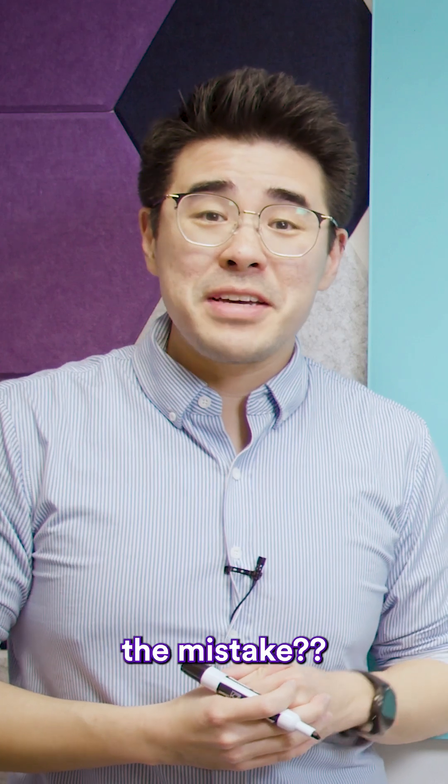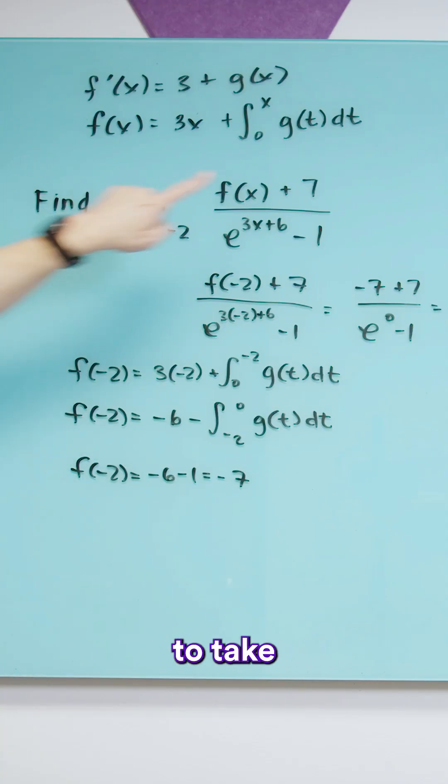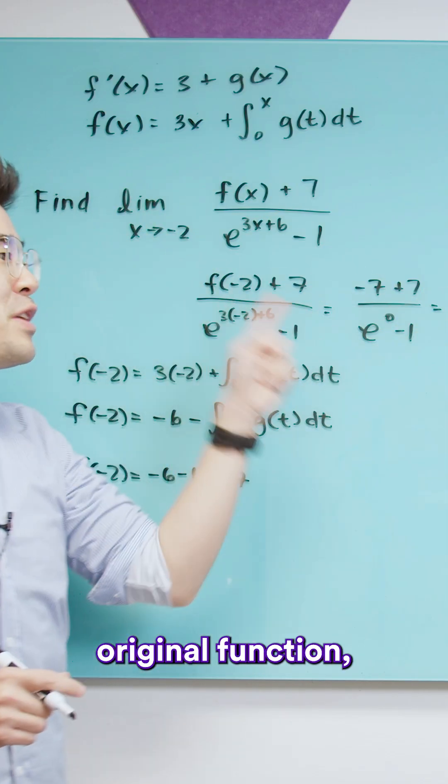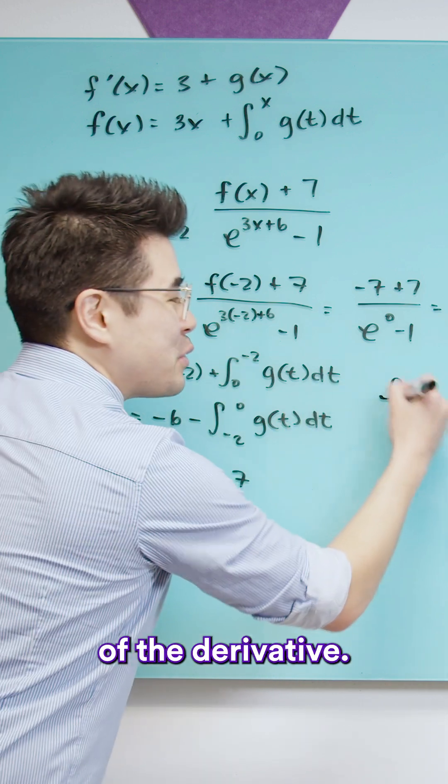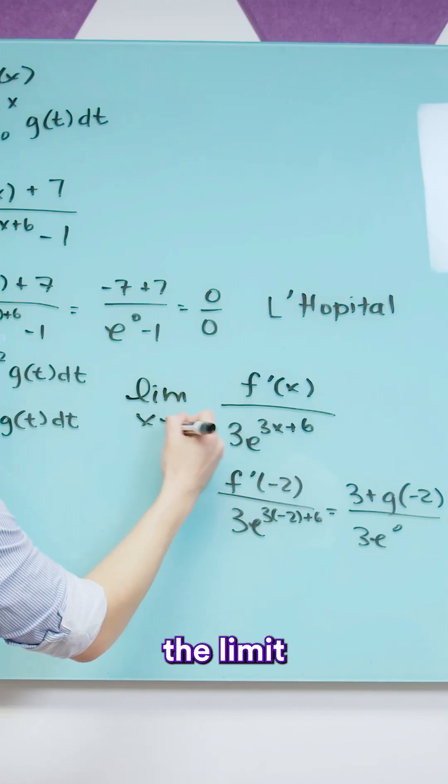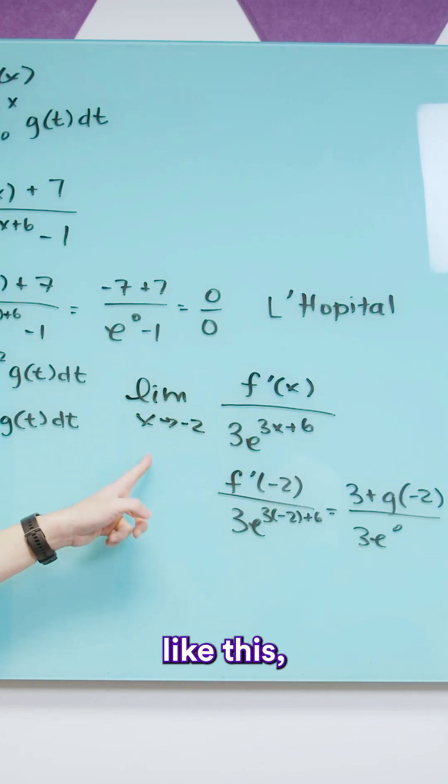Stop! Did you spot the mistake? When you're using L'Hopital's rule you're supposed to take the limit of not only the original function but you're supposed to take the limit of the derivative. If you do not take the limit of the derivative like this then you can at most score 1 out of 3 points.